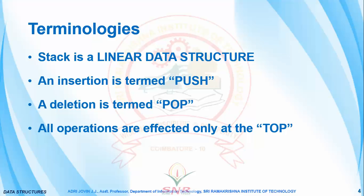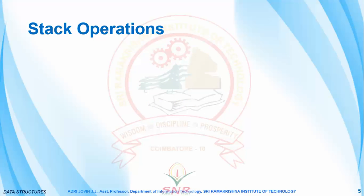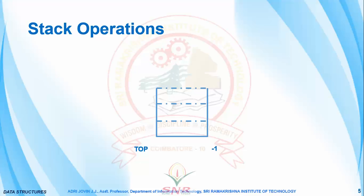Let us have a short demonstration of the operations in a stack. Consider the stack, which has three partitions represented using dotted lines. This stack can hold three elements. Since the stack is empty, the top is initialized to minus one. When we initialize a push operation, the top will be initialized to zero. Let us push an element 10 into the stack — now the top will move to 10 and indicates one.